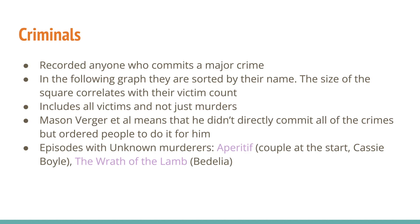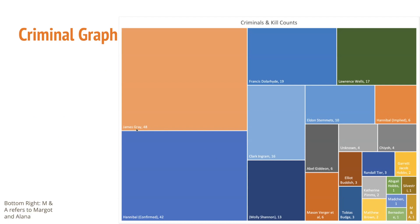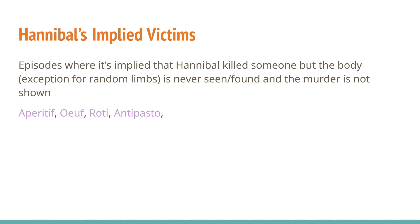The episodes with unknown murderers are the first and last: Aperitif, with the couple at the opening scene and Cassie Boyle who was the girl on the antlers, and the Wrath of the Lamb with Bedelia. This is my chronograph. James Gray has the most — he's the muralist, he kills 48 people. Hannibal confirmed kills 42 people, and if you add his six implied victims he's actually tied with James Gray. Francis Dollarhyde is 17. Lawrence Wells is the totem pole guy. Abel Gideon kills six. Mason Verger I just explained. Margot and Alana killed Mason, so they're listed together.